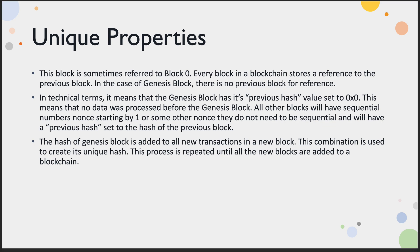The biggest unique property is that its previous hash value is going to be set to zero — '0x0' or just a big long line of zeros — because there's no process data before that Genesis block. All the other blocks will have sequential numbers, with a nonce starting at one or some other value, and they have a previous hash set to a previous block. Everything else builds on top of that Genesis block, including all other blocks.